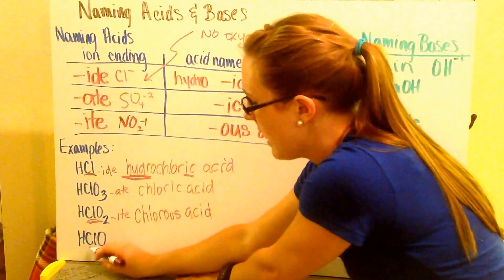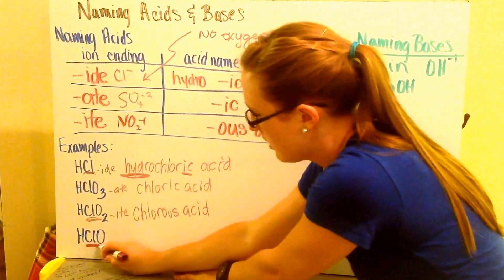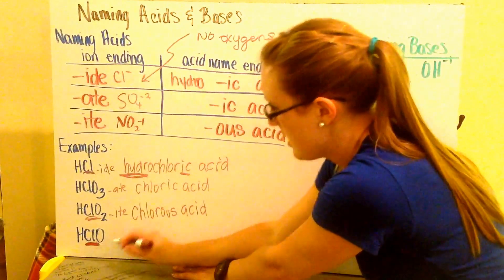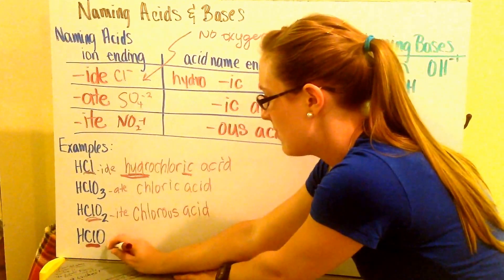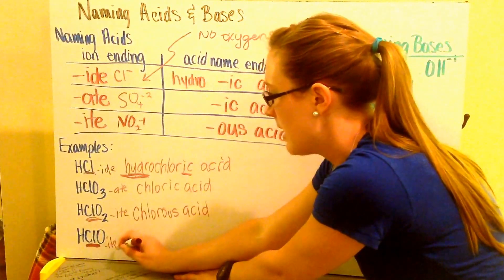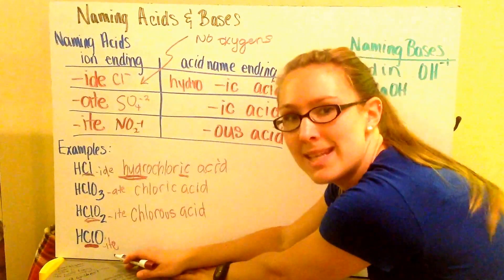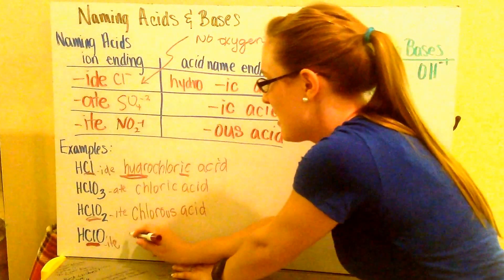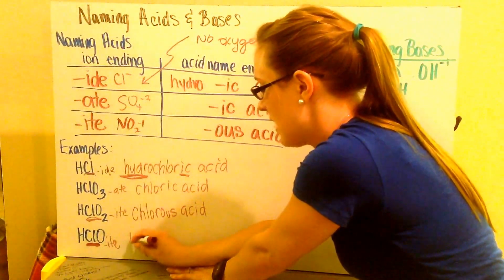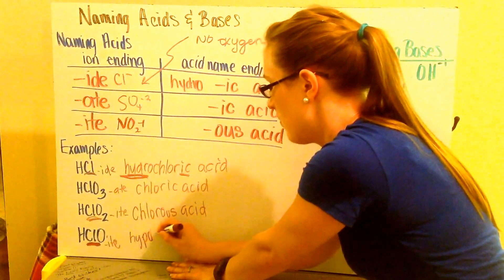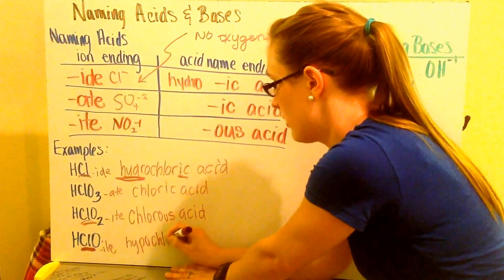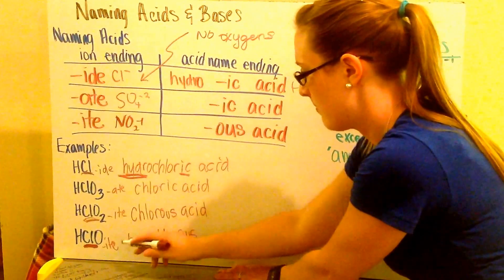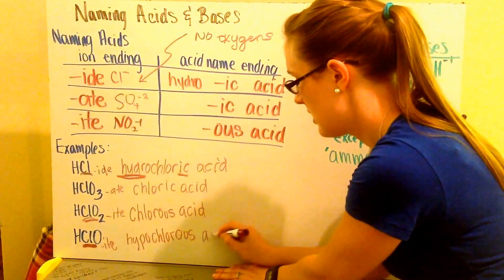Then finally, I have hypochlorite here. My hypochlorite ion is going to end, again, with that ITE ending. That's all that matters is my ending of my acid. So because that one ends in that ITE ending, I'm going to have an OUS acid. So again, I'm going to have, in this case, I have hypochlorite, hypochlor, and then my ending now is that OUS. Because of my ITE ending. So I have hypochlorous acid.